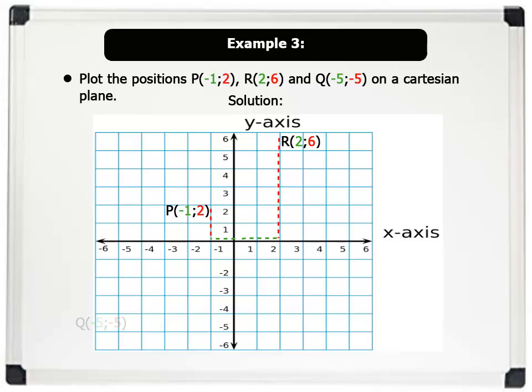And to plot position Q (minus 5, minus 5), we start from the origin, move left along the x-axis to minus 5. Then, we move down the y-axis to minus 5. That's brilliant.